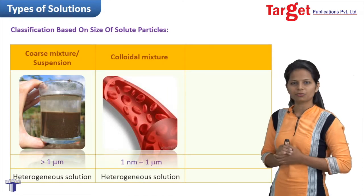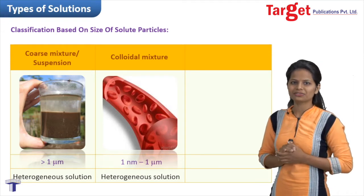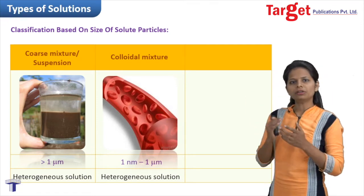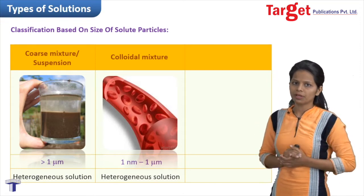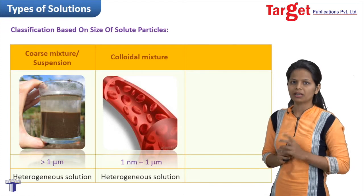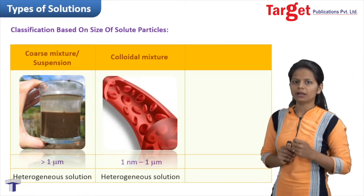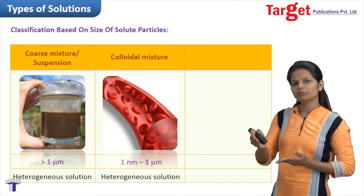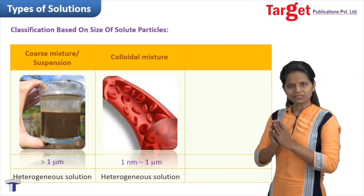The second category is called a colloidal mixture. This is a very interesting category wherein the size of solute particle ranges from 1 nanometer to 1 micrometer. With the naked eye you can't make out the difference between solute and solvent particles, and even with some microscopes you cannot. Only with a high-power microscope can you categorize them into two different phases. Human blood is a colloidal mixture — the solvent is water with WBCs and RBCs present in it, making it a heterogeneous mixture.